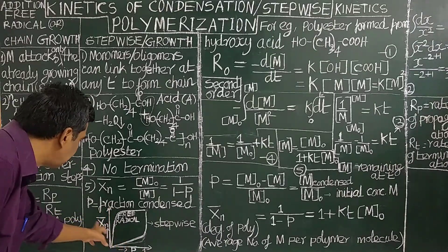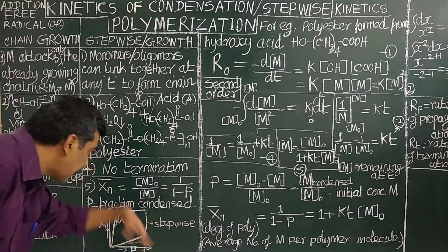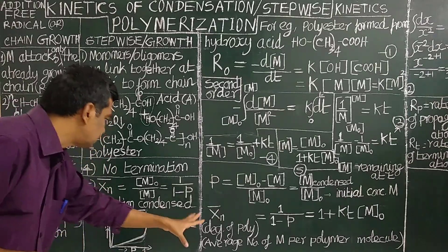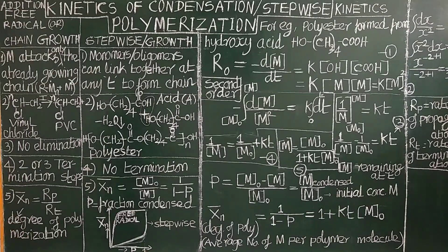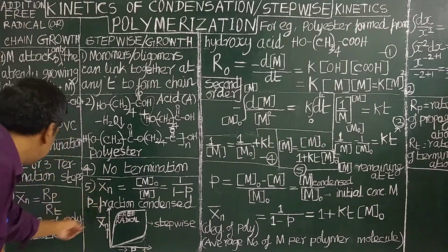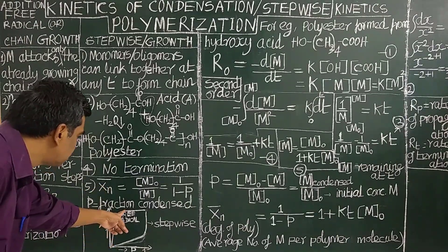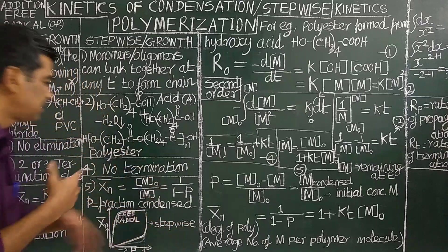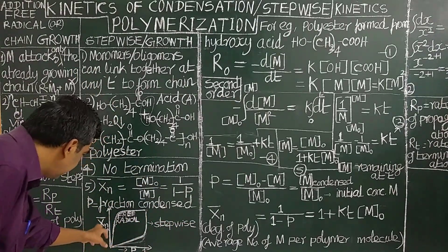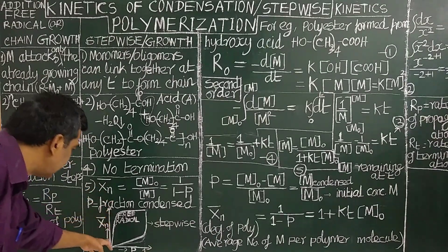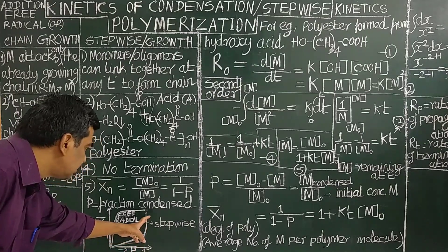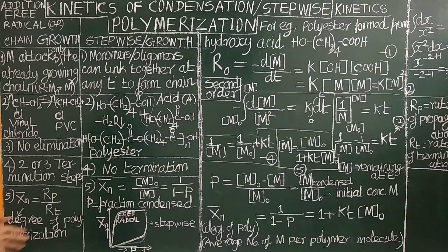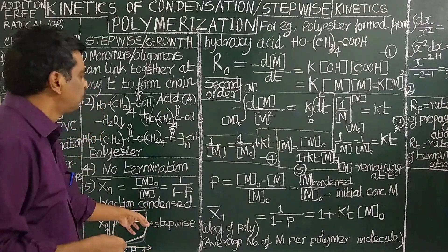A plot of degree of polymerization versus fraction of monomer molecule condensed (P) is shown for both free-radical polymerization and stepwise polymerization. In free-radical polymerization the degree of polymerization increases from the beginning and slowly continues increasing. In stepwise polymerization the average chain length increases slowly at first and then increases tremendously towards the end of polymerization, where P approaches 1 and almost all monomers are condensed.